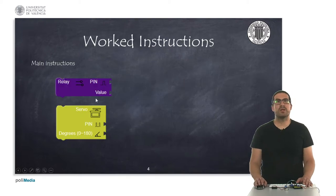So these are the two work instructions. The first one is the relay instruction. Actually this instruction is exactly the same as a digital write instruction, so it just simply has the name relay. You can just simply put the pin here and the value which is high or low.